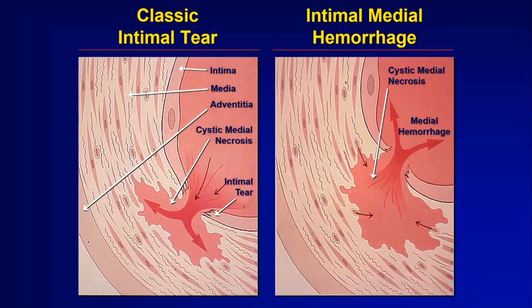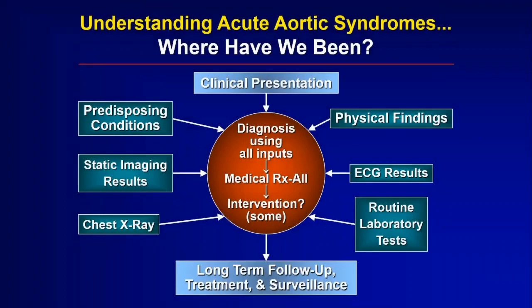Obviously, if the dissection starts to affect vital arteries to various parts of the body, it can be incredibly dangerous. In thinking about identifying patients with an aortic dissection, doctors think about whether patients have any predisposing conditions that might make them more likely to have one — that might be a genetic problem or a familial tendency. The physical exam and imaging are important, and we use laboratory tests and an electrocardiogram too.